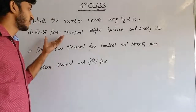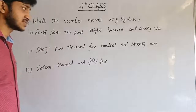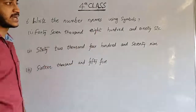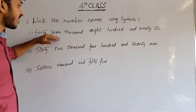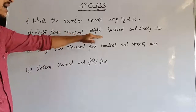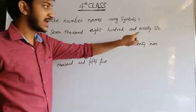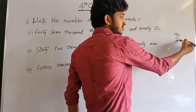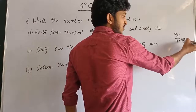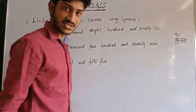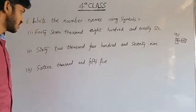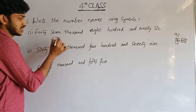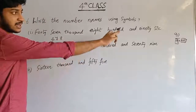Children, see the next question: write the number — change the word form into numeral form. First one is forty-seven thousand, eight hundred and ninety-six. Total thousands are forty-seven. Hundreds: eight hundreds. Ninety means nine tens. Six is in ones place. So the number is 47,896.